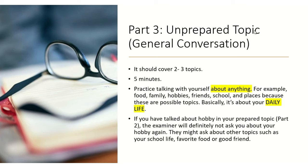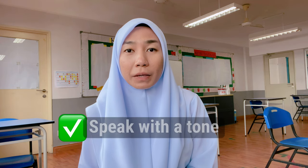For Part 3, unprepared topic — general conversation — it should cover two to three topics over five minutes. Practice talking with yourself about anything: food, family, hobbies, friends, school, and places, because these are the possible topics. It's basically about your daily life. If you talked about your hobby in Part 2, the examiner will not ask about it again — they might ask about your school life, favorite food, or a good friend.